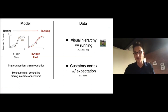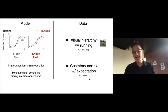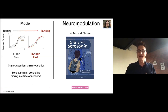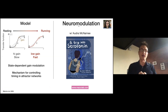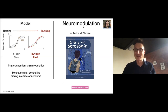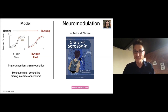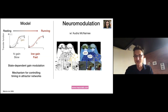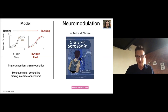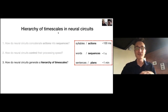This confirms the mechanism we proposed in a paper published last year in gustatory cortex with a group at Stony Brook, where we found an acceleration of coding due to expectation. We propose this state-dependent gain modulation as a general mechanism for controlling timing in attractor networks across any cortex. We also paired with an artist at the University of Oregon comics studies program and wrote a graphic novel on neuromodulation available on our website.